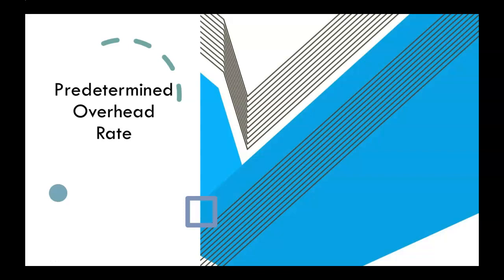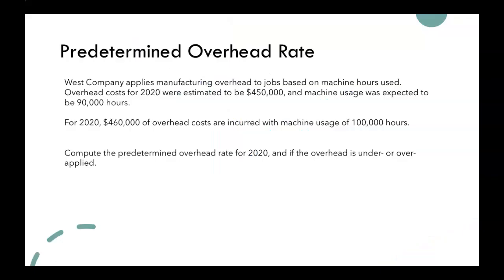Let's work through an example problem for the predetermined overhead rate. Our example problem says: West Company applies manufacturing overhead to jobs based on machine hours used. Overhead costs for 2020 were estimated to be $450,000, and machine usage was expected to be 90,000 hours. Then, in 2020, $460,000 of overhead costs were incurred with machine usage of 100,000 hours.